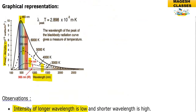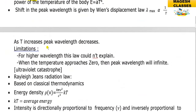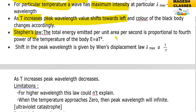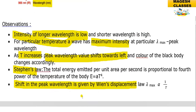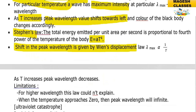There are two important laws here. Stefan's law states that the total energy emitted per unit area per second is proportional to the fourth power of the temperature of the body: E = aT⁴, where a is the Stefan constant. Wien's displacement law states that the peak wavelength lambda-max is inversely proportional to temperature T.